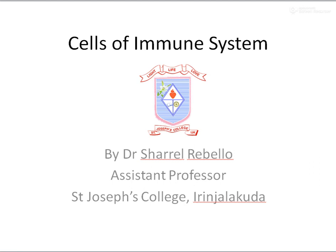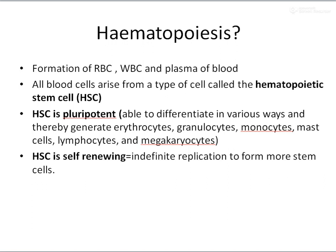The process of hematopoiesis is mainly referred to as the formation of RBC, WBC, and the plasma of the blood — that is, the formation of the components of the blood. All blood cells arise from a type of cell called the hematopoietic stem cell.